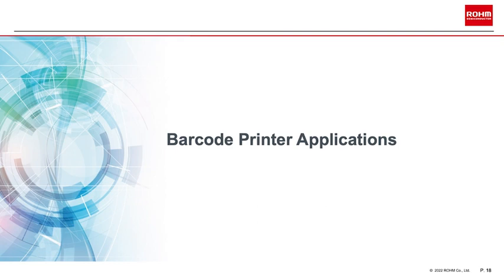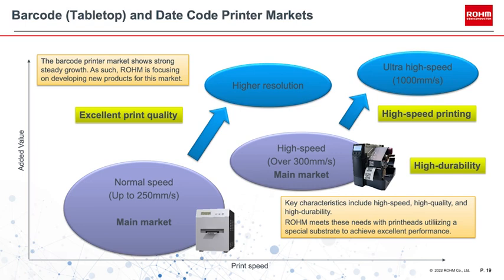Let's move to the barcode printer market. Our thermal print heads optimized for barcode printers are highly durable, high added value, and used primarily in industrial equipment. There are two main segments: normal printers with print speeds up to 250 millimeters per second, and high-speed printing at 300 millimeters per second and higher. The shift toward e-commerce has increased delivery volumes, driving rapid growth in the barcode printer market and increasing demand for high-resolution and higher-speed printing.